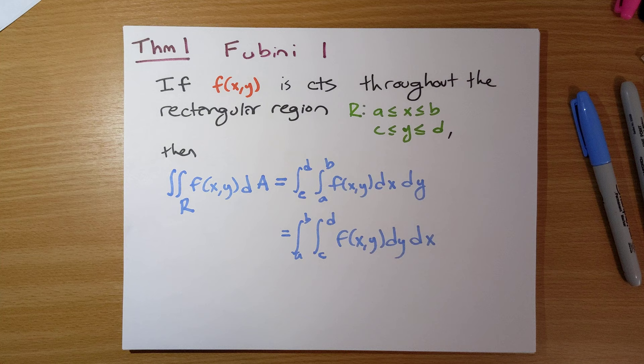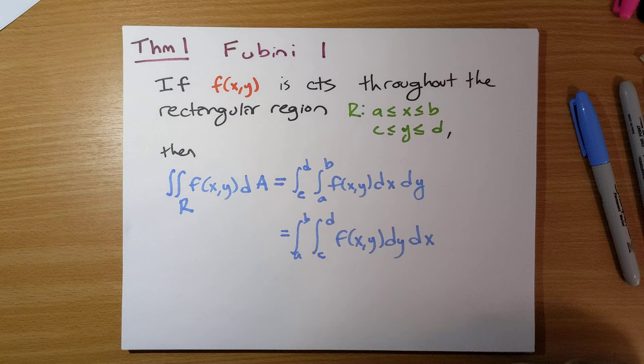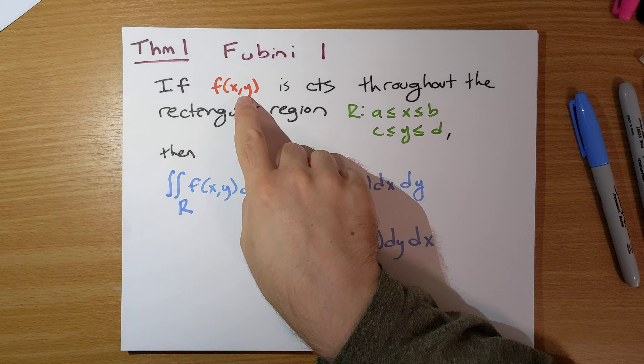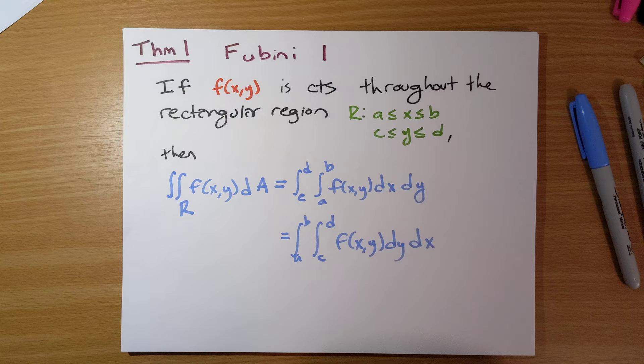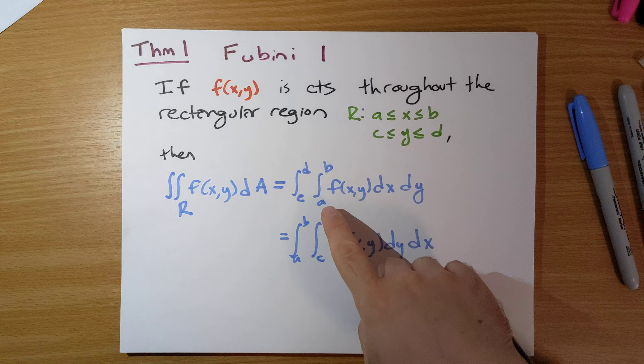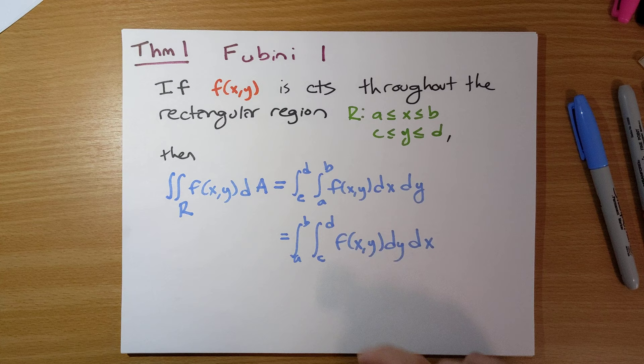In our last section we had the first version of Fubini's theorem for how to evaluate double integrals. If we have a function f(x,y) integrating over a rectangular box where x is between a and b and y is between c and d, we write this as an iterated integral — y runs from c to d, x runs from a to b — and we can put this in either order.